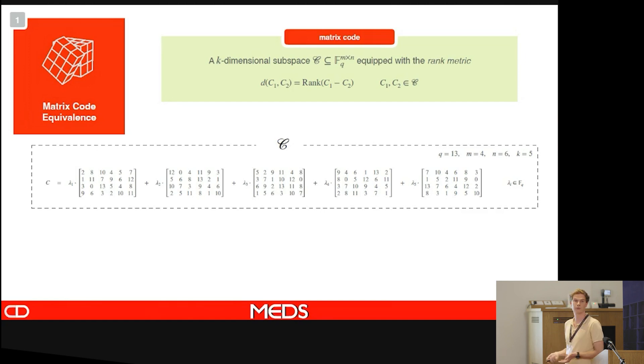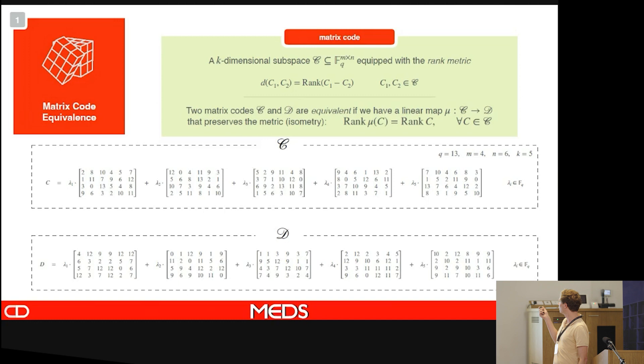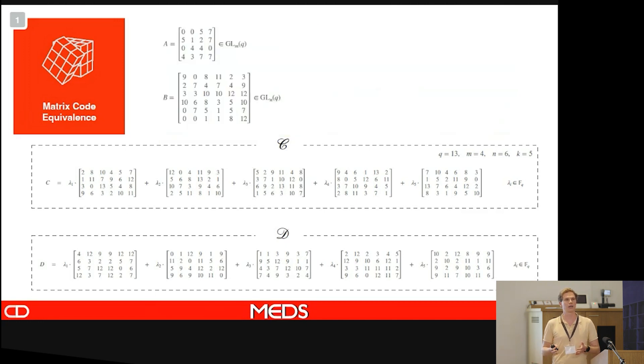For equivalents, we of course need two codes. So let's consider another code, D. What would be an equivalence between those two? To be an equivalence, we need a linear map that maps code words of a certain rank to another code word of the same rank, so that preserves the metric or an isometry.